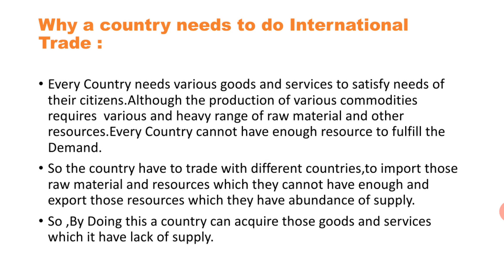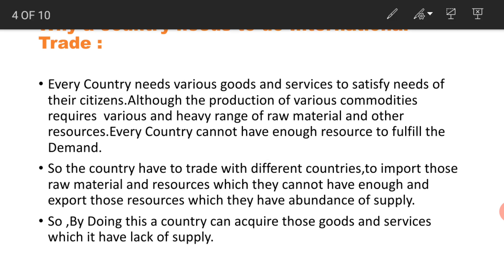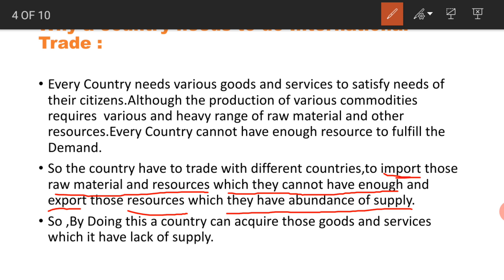So the country has to trade with different countries to import those raw materials and resources which they do not have enough of, and export those resources which they have an abundance of supply. A country will approach another country to import raw materials and resources it lacks, and in exchange export the resources it has in abundance. By doing this, a country can acquire those goods and services which it lacks.